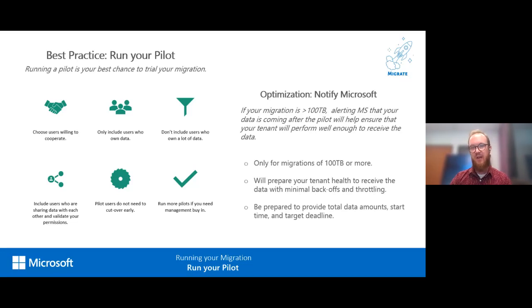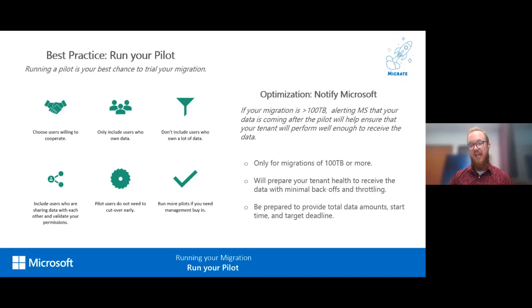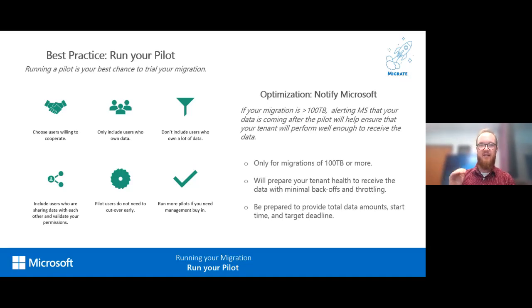We also recommend notifying Microsoft if your migration is over 100 terabytes. There is an official path for this — you or your accounts team can submit a form alerting Microsoft so they can prepare your tenant for what's about to happen. This ensures tenant health, removes anything preventing Mover from uploading as much data as possible, and asks when you're migrating, how much, and when you expect to finish.